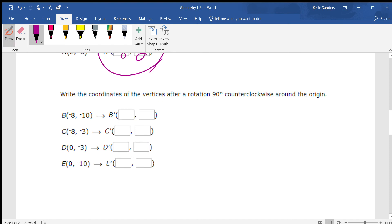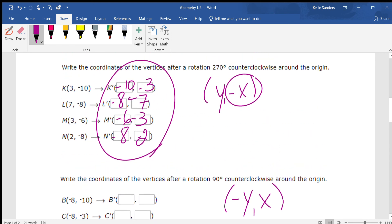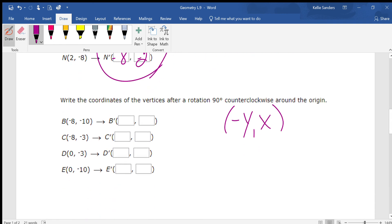90 degrees counterclockwise: negative y and just x. I need to check output. 90 degrees counter, negative 6, so that x goes to the y, and then the y's change.